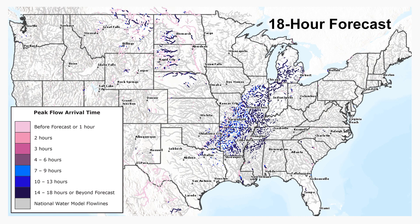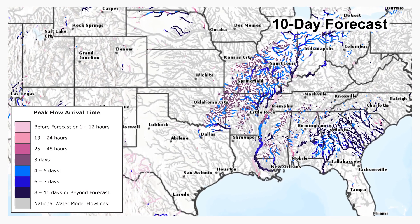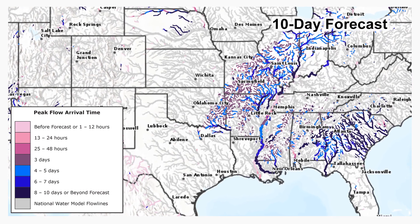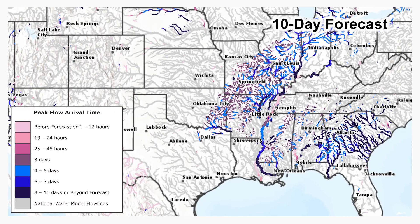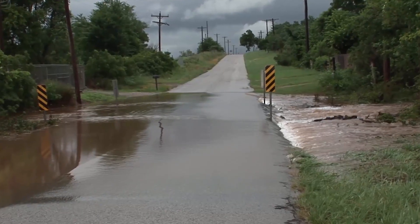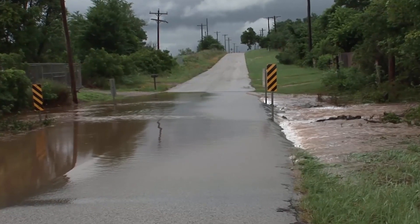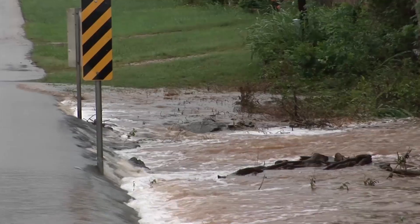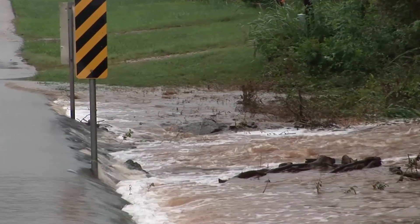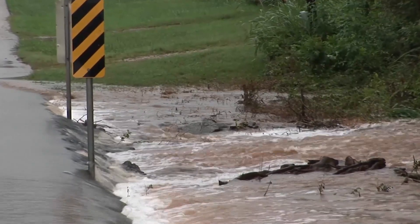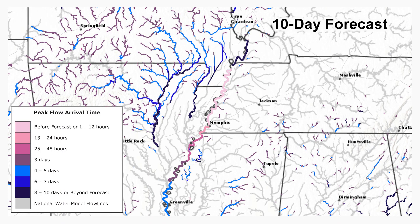The 10-day peak flow arrival time forecast visualization highlights stream reaches expected to have flow at or above the estimated high water threshold within the next 10 days. Reaches are colored by the time at which they are expected to be at their maximum flow within the forecast period.